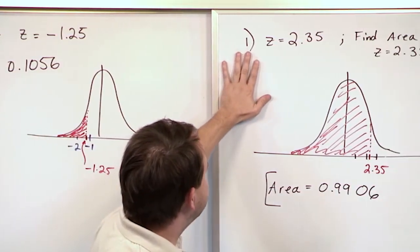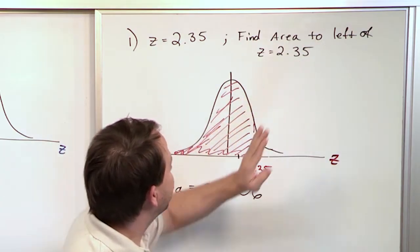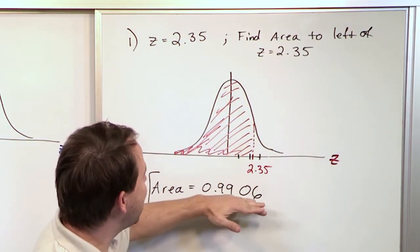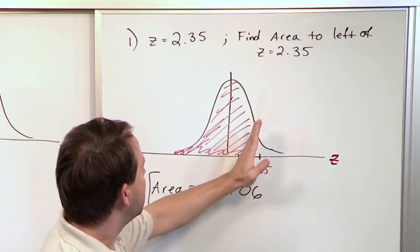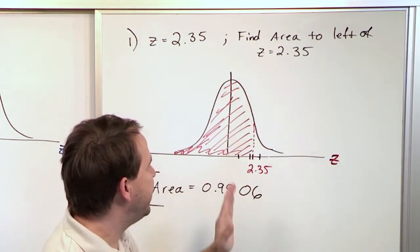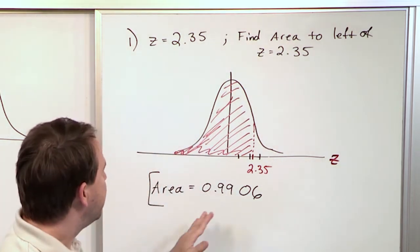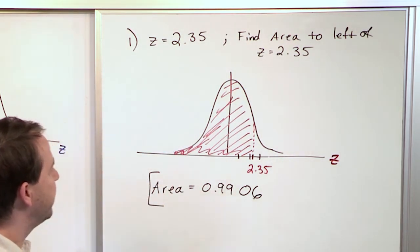Then when we get to this case, when we have 2.35, which is way over here to the right, the answer we get is 0.9906 because notice we almost have the entire curve shaded. If you shade the entire thing, you should get an exact area of 1. So we get very close to 1, 0.9906.